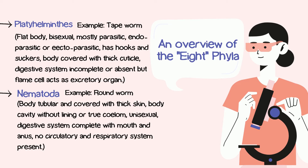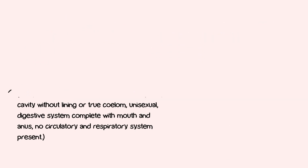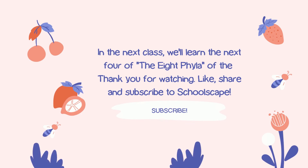Today we talked about Porifera, Cnidaria, Platyhelminthes, and Nematoda. In the next class we are going to talk about the rest of the invertebrate category animals. Till then, stay tuned to School Scape and like this video, share it with your friend who is struggling with science, and don't forget to subscribe to School Scape. If you have any questions regarding the whole lecture, just drop them in the comment section below. Assalamu Alaikum.